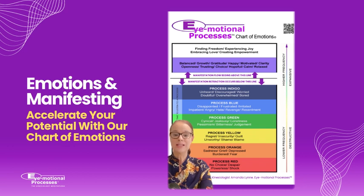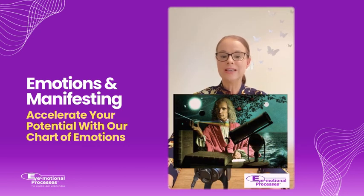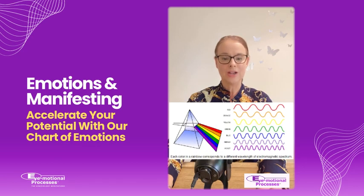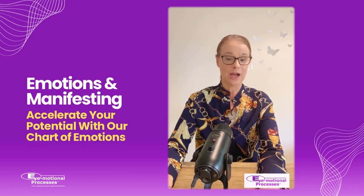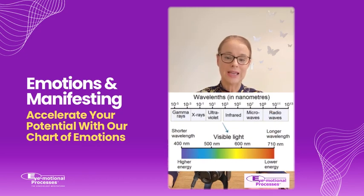Each of these process colour bands, including the violet and white colours, are related to different energy, frequency and vibrational levels. The chart's emotions also connect to Newton's colour frequency theory, whereby colour relates to the speed of light at 300,000 kilometres per second. To understand colour frequencies and how they relate to the different colours on the iEmotional Processes chart of emotions, it is helpful to understand that light is electromagnetic energy with frequency, wavelength and energy associations.